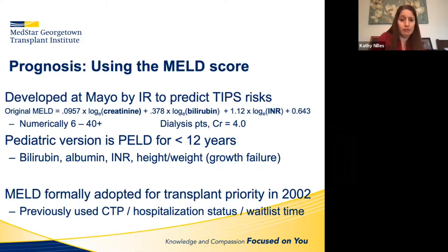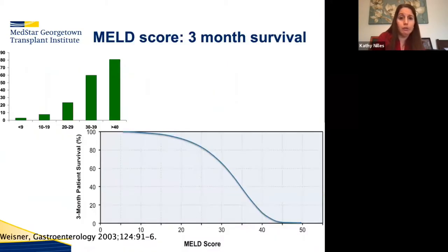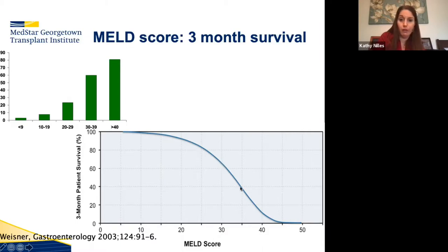Previously we used CTP — which was subjective — as well as hospitalization status (at home, on the floor, or in the ICU), which had considerable potential to game the system by putting people in the ICU for higher priority, plus waitlist time. Now we use MELD. The three-month survival curve based on MELD shows that around a MELD of 30, survival drops to about 70%, then drops off quickly, and above 40 the likelihood of death is above 80%.